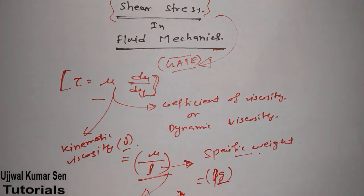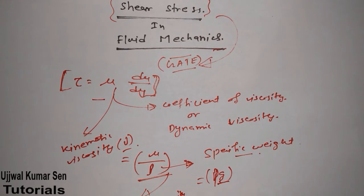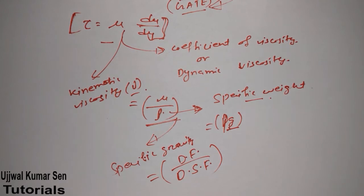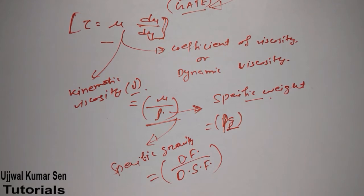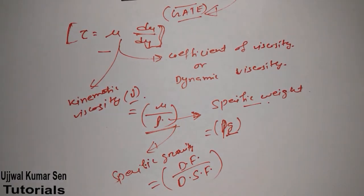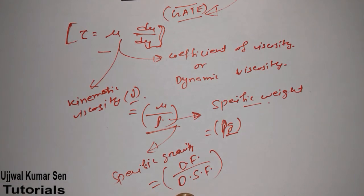Specific gravity equals the density of the fluid divided by the density of the standard fluid. GATE problems relate these quantities together to increase the difficulty level. If you are preparing for GATE and solving previous year papers, you can see these questions are very different from university exams — GATE tries to relate things with each other, which is why you cannot score 100 out of 100 in GATE.